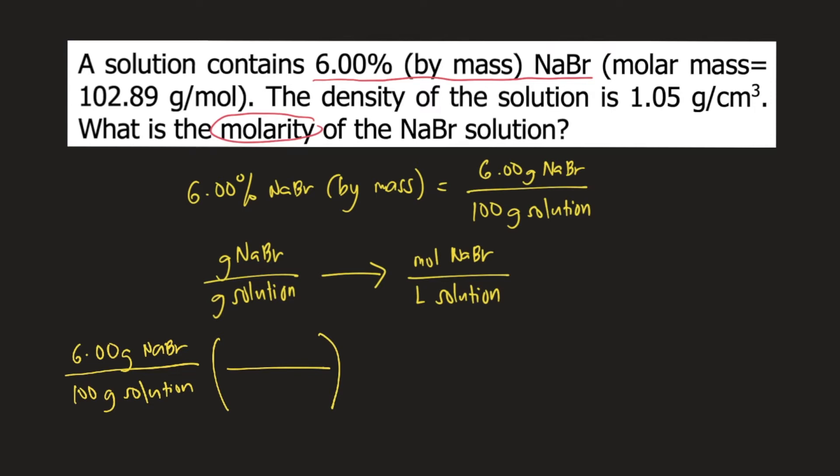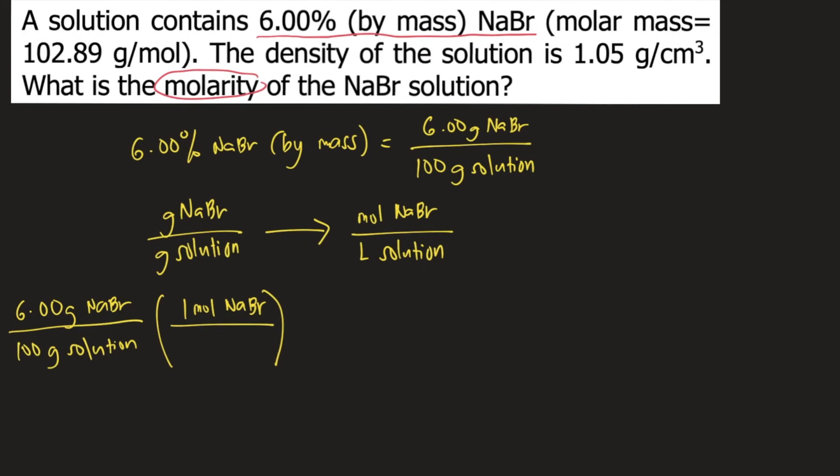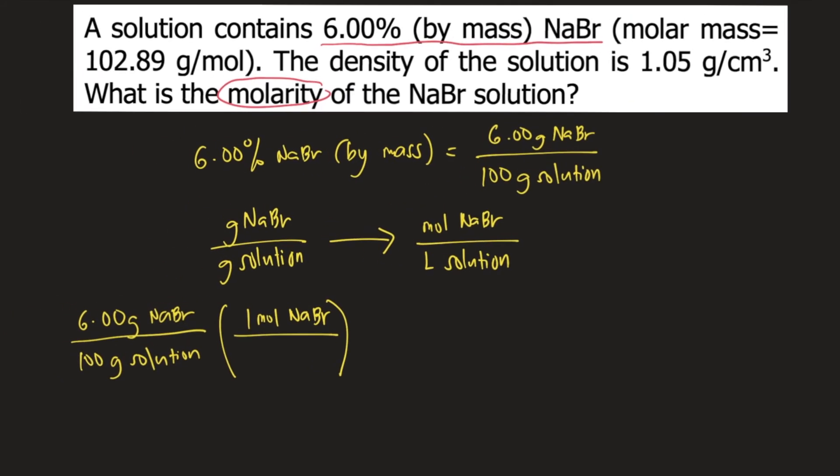In order to convert grams of NaBr to moles of NaBr, we need to make use of the molar mass. The molar mass is given in the problem. It says there that for every 1 mole of NaBr, it weighs 102.89 grams. So the grams of NaBr would cancel. We now have moles NaBr on top.